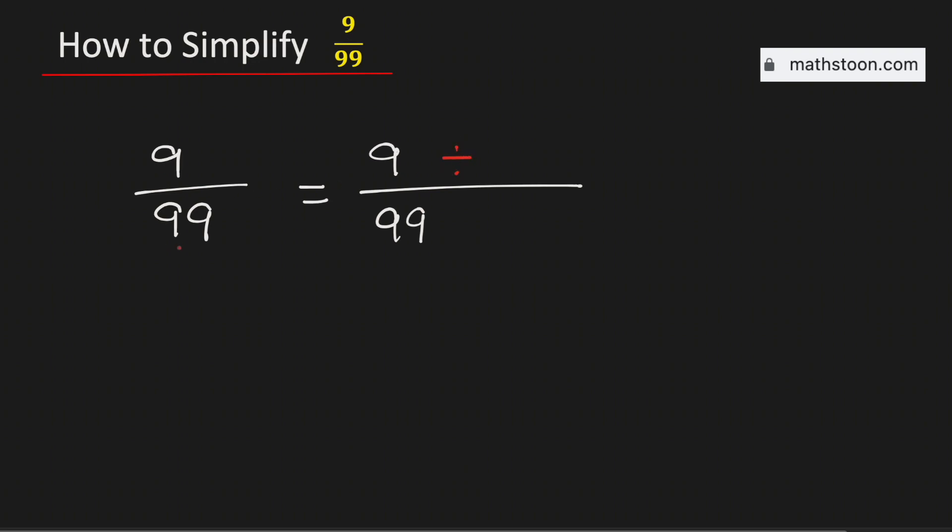Therefore, to simplify this fraction, we will divide both the numerator and the denominator by 9. And if we do so, we will get 1 over 11.